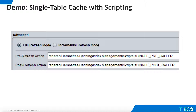Now we add the scripts on the advanced panel of the cached view. When the view is subsequently refreshed, the pre-refresh script will execute first, dropping the index on the cache table. Next, the cache refreshes. This refresh should run more quickly than before because there is no index to be updated as new rows are added. When the refresh operation is complete, the post-refresh script runs, creating the index without any impact on the data load.